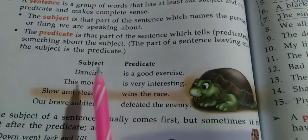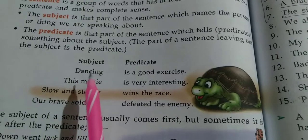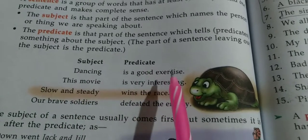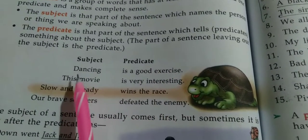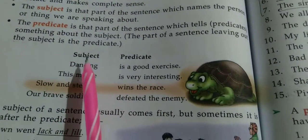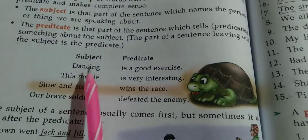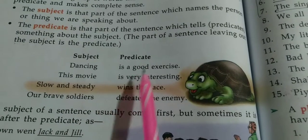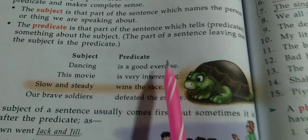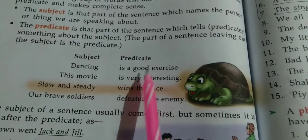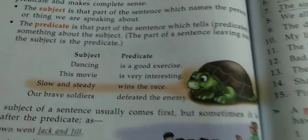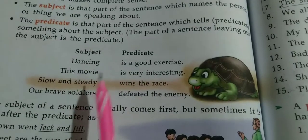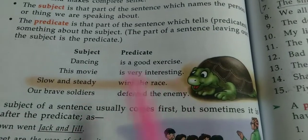We see a sentence: 'Dancing is a good exercise.' Here, 'dancing' is the subject and 'is a good exercise' is the predicate. Another example: 'This movie is very interesting.'